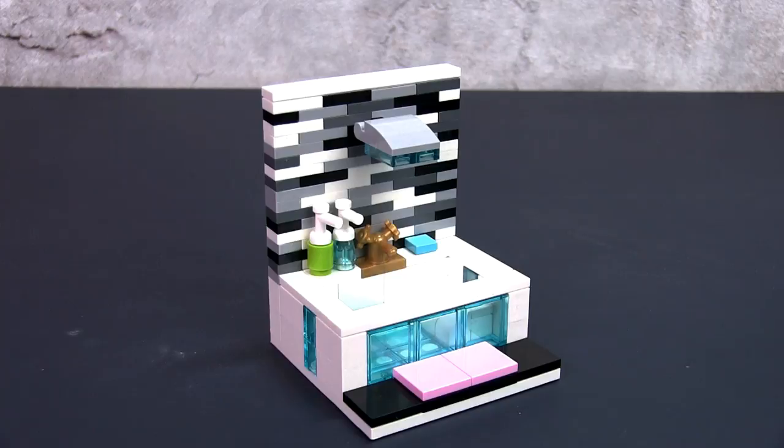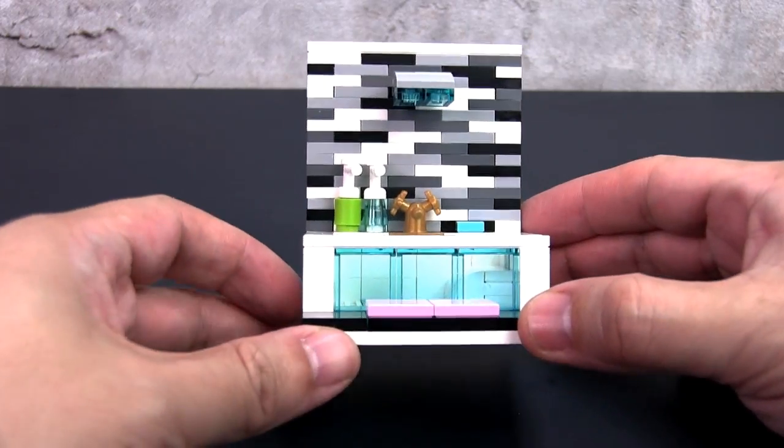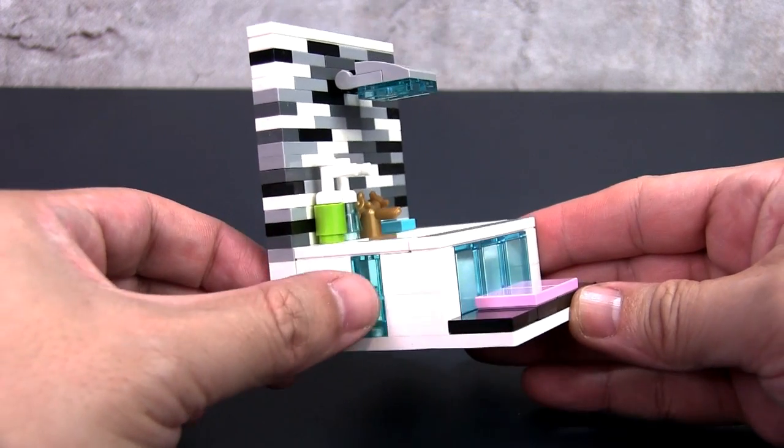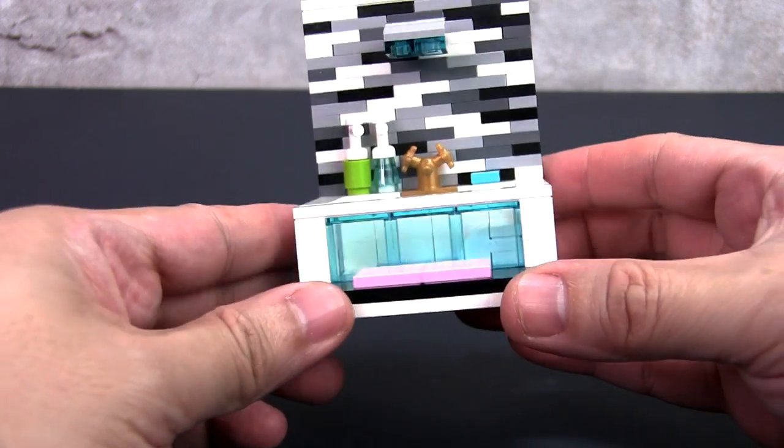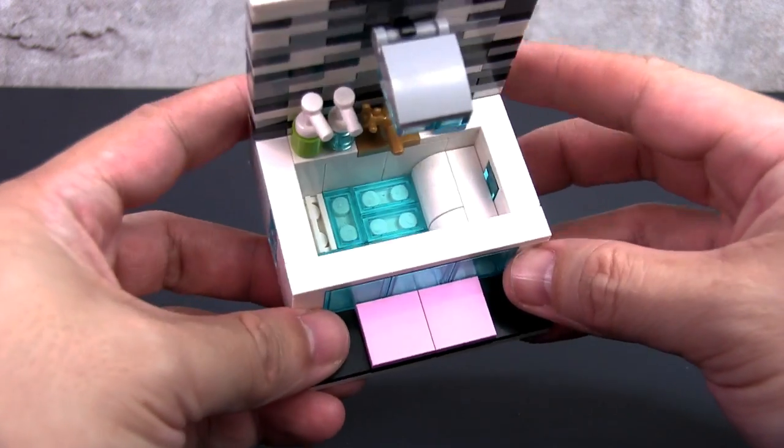At the foot of the bathtub is some black tiling as well as a pink bath mat. The bathtub itself was designed as a modern one, so there are trans-blue bricks and panels on either side. This contrasts with the white body to give a very modern and clean look.